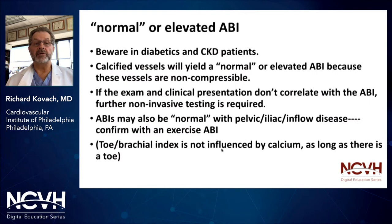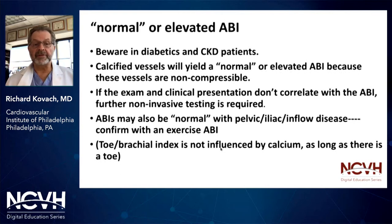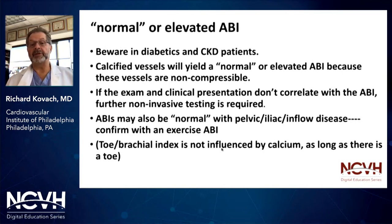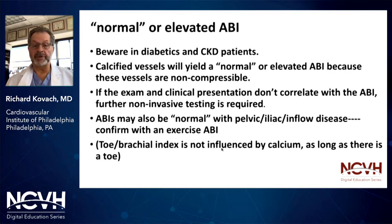Be wary of an elevated or normal ABI, particularly in patients who are diabetics or have significant kidney disease. These patients typically have very calcified vessels. Calcified vessels yield a normal or elevated ankle brachial index because these vessels are non-compressible. If the clinical presentation suggests PAD but doesn't correlate with the ankle brachial index, further non-invasive testing is required. ABI may also be normal in patients with inflow disease — specifically the distal aortic or iliac vessels — who will often have a substantial drop in their ABI with exercise. So if you suspect PAD and they have a normal ABI at rest, follow up with an exercise ABI.